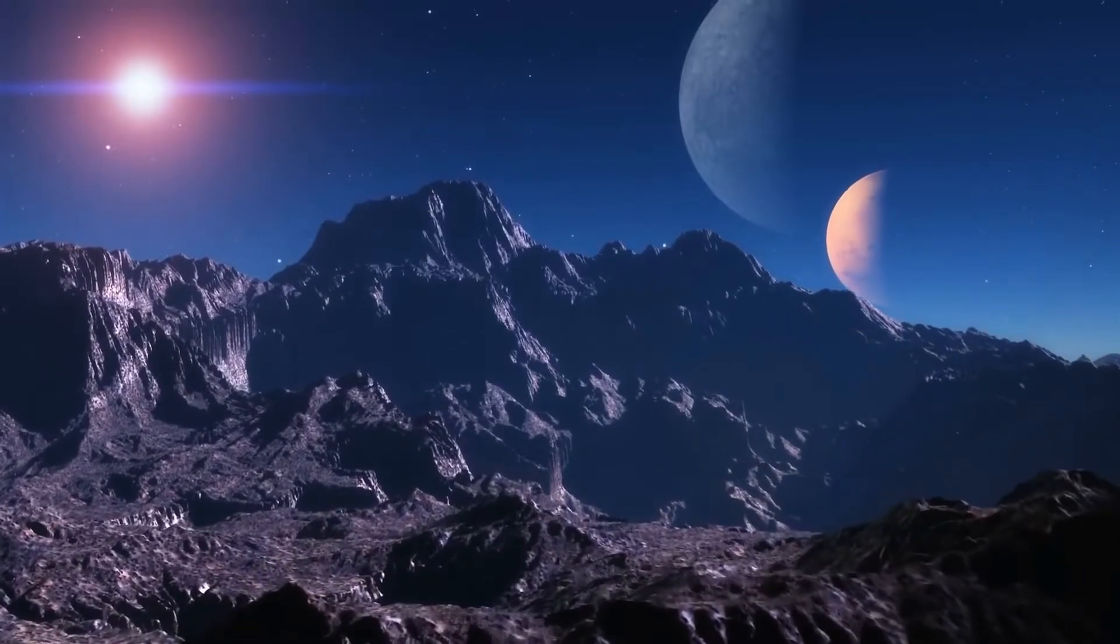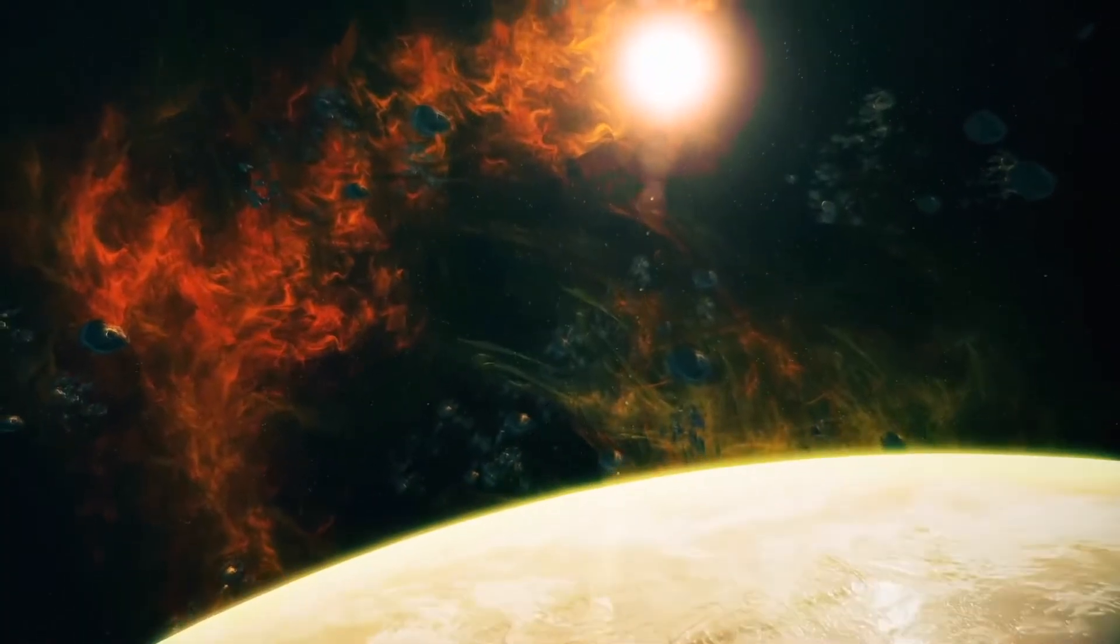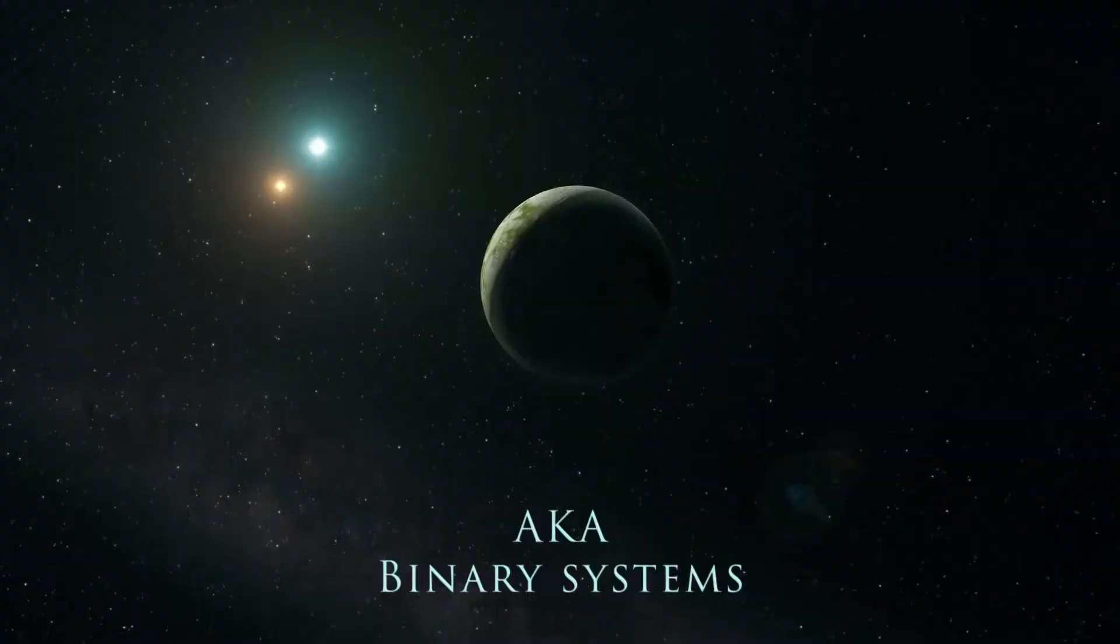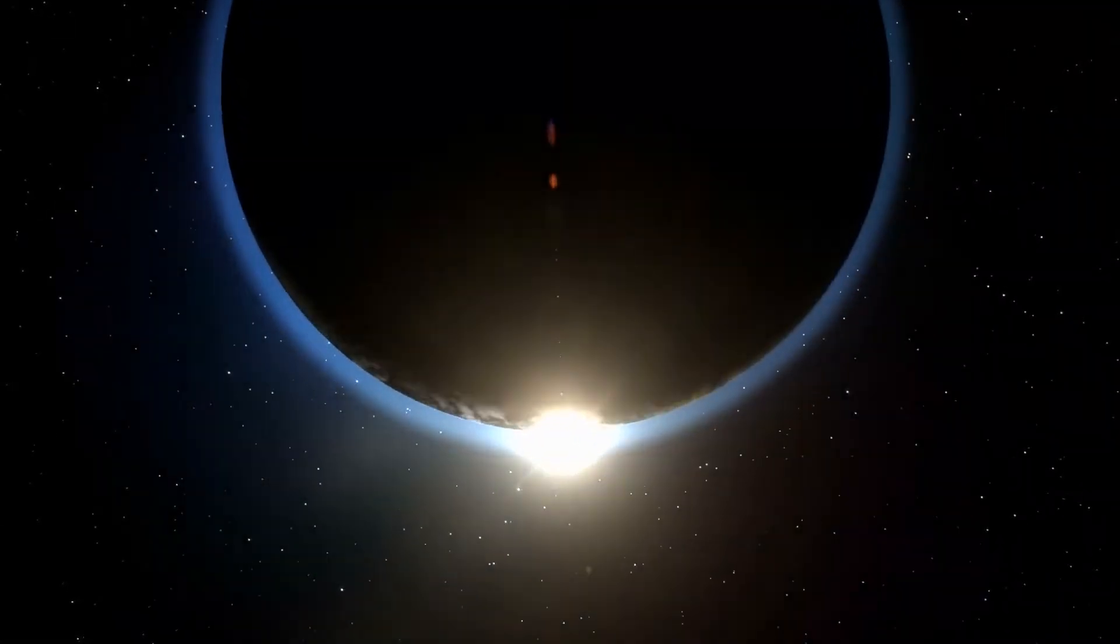Planets have been found orbiting all kinds of stars—stars like the Sun, stars brighter and fainter than the Sun, and even some planets that orbit two suns. However, scientists have announced the first planet to be found orbiting a brown dwarf.